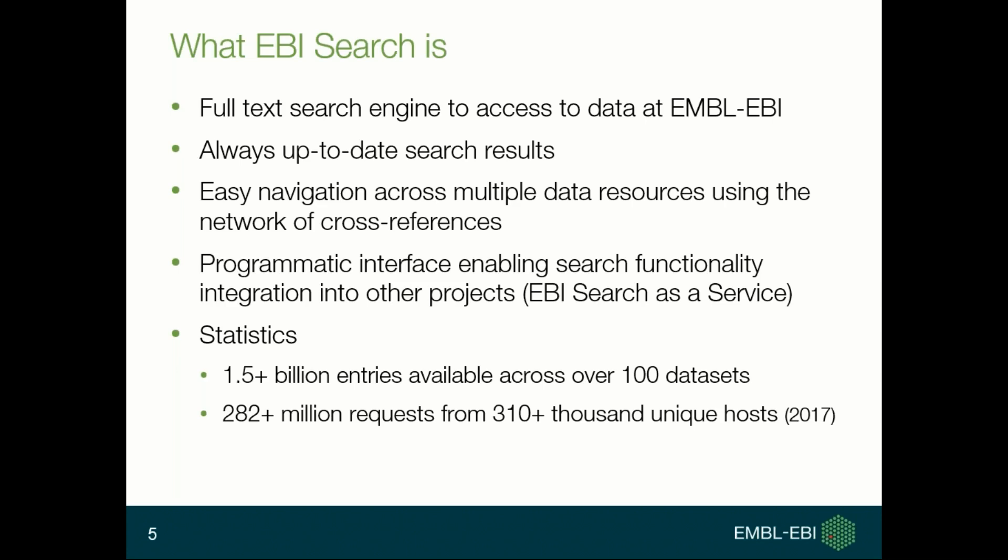Every morning we check individual datasets, and if we find updated datasets we index them from scratch, so our users can always get up-to-date search results. We also provide a cross-reference network so users can easily navigate across multiple data resources. We have a web interface so users can use it like Google, and we provide web services for programmatic access so API users can integrate such functionality into their projects. We now have more than 1.5 billion entries from over 100 datasets, and in the last year we processed more than 282 billion requests from about 310,000 unique hosts.